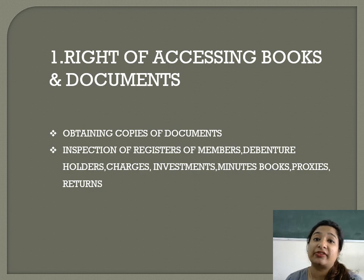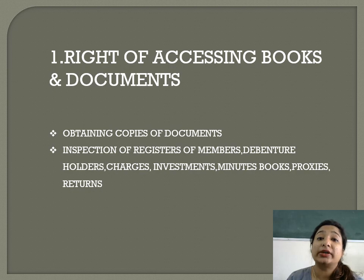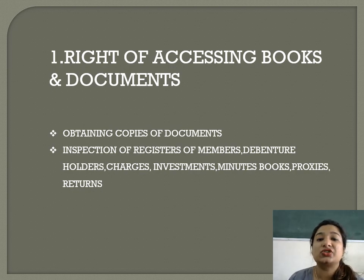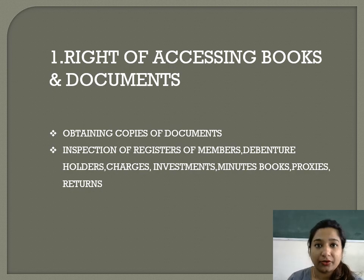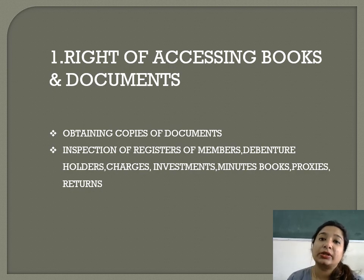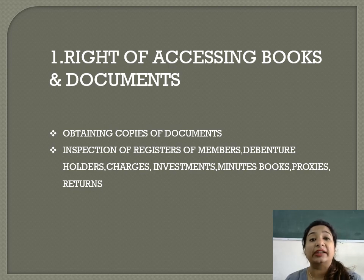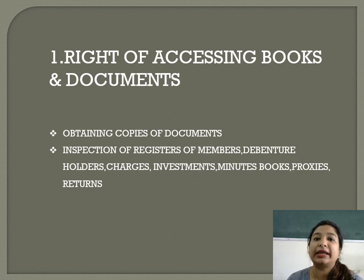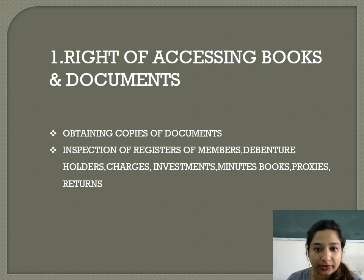The balance sheet is made and audited by the auditor. The auditor makes a report based on the balance sheet or the entries made by the accountant. When the CA or auditor does the auditing, he makes an auditor's report, and based on that, the final profit and final investments are decided in a meeting and then the dividend is distributed to the shareholders or members of the company.